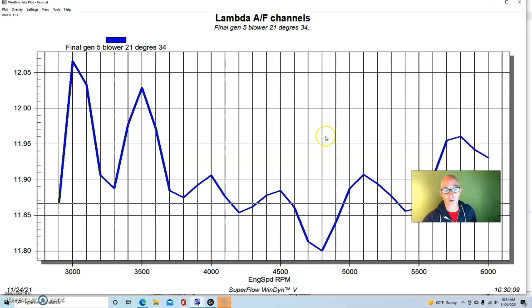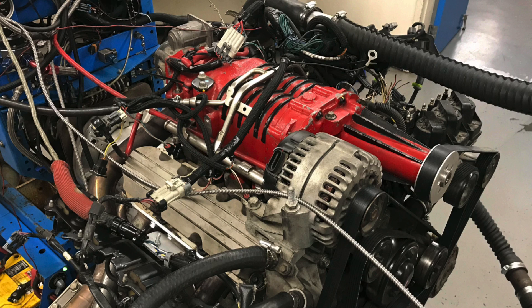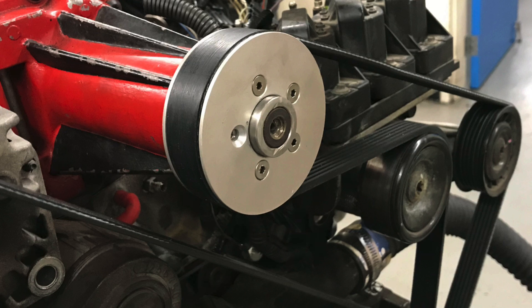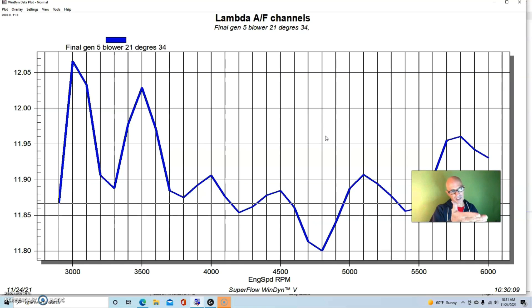So this was the air fuel curve of our supercharged 3800 with just the 3.2 inch pulley and no water methanol. And we went from 12.0 and it dipped down to 11.8 and was in the eleven nines or so range. So it was tuned pretty well.